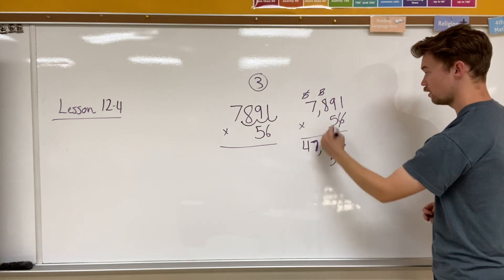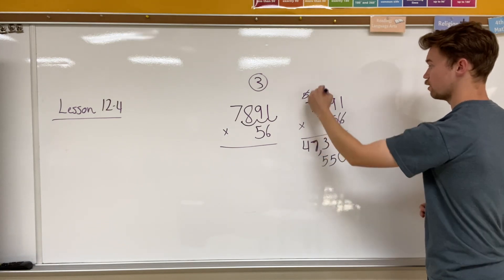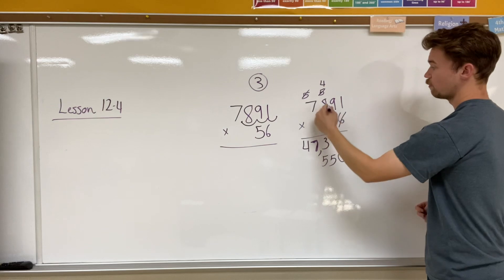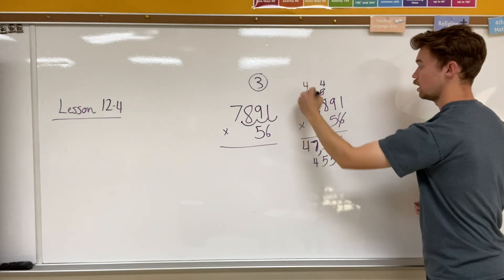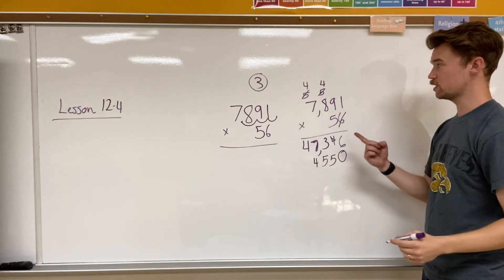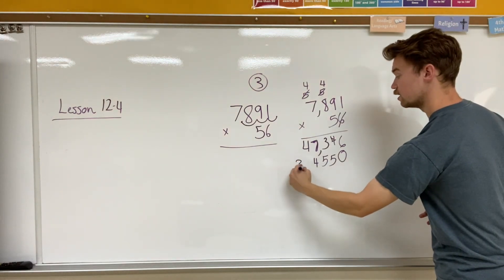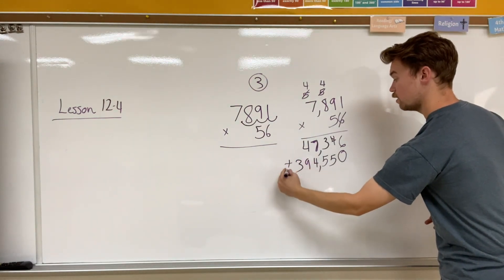5 times 1 is 5. 5 times 9 is 45. Carry the 4. 5 times 8 is 40. Plus 4 is 44. And 5 times 7 is 35, 36, 37, 38, 39. And I'm going to add all this together.